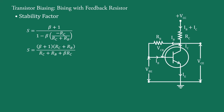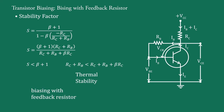It is clear that (RC + RB) is less than (RC + RB + β × RC), and therefore S is less than (β + 1). We can say that the thermal stability of this circuit is better than that of the fixed bias circuit, because in the fixed bias circuit S = β + 1, whereas here S < β + 1.